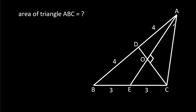In this video, we have been given that angle AOC is 90 degrees, AD is 4, BD is 4, BE is 3, CE is 3. We have to find the area of triangle ABC.